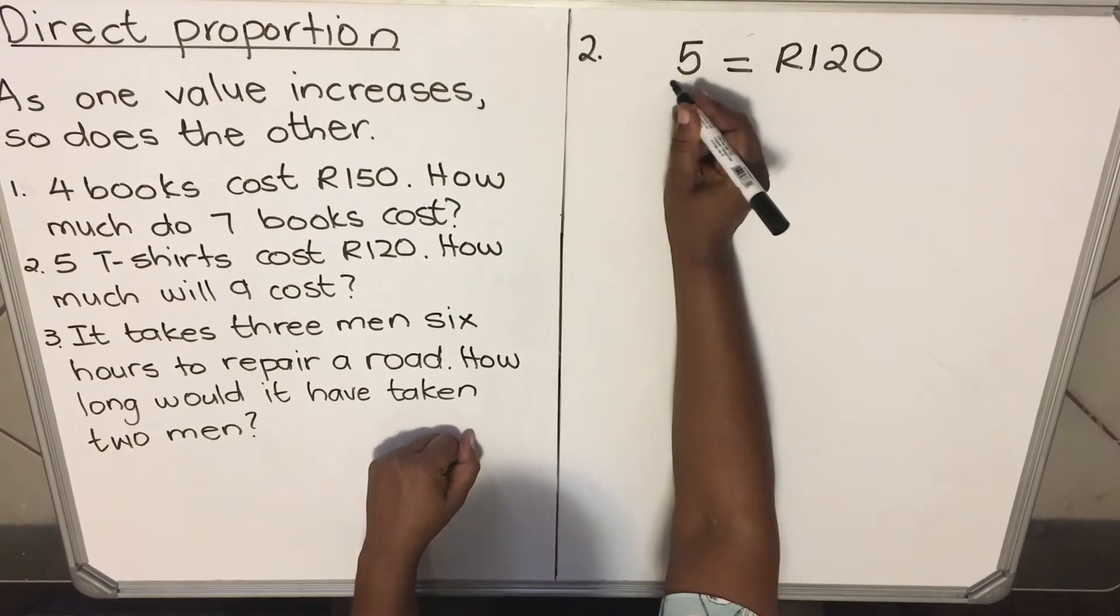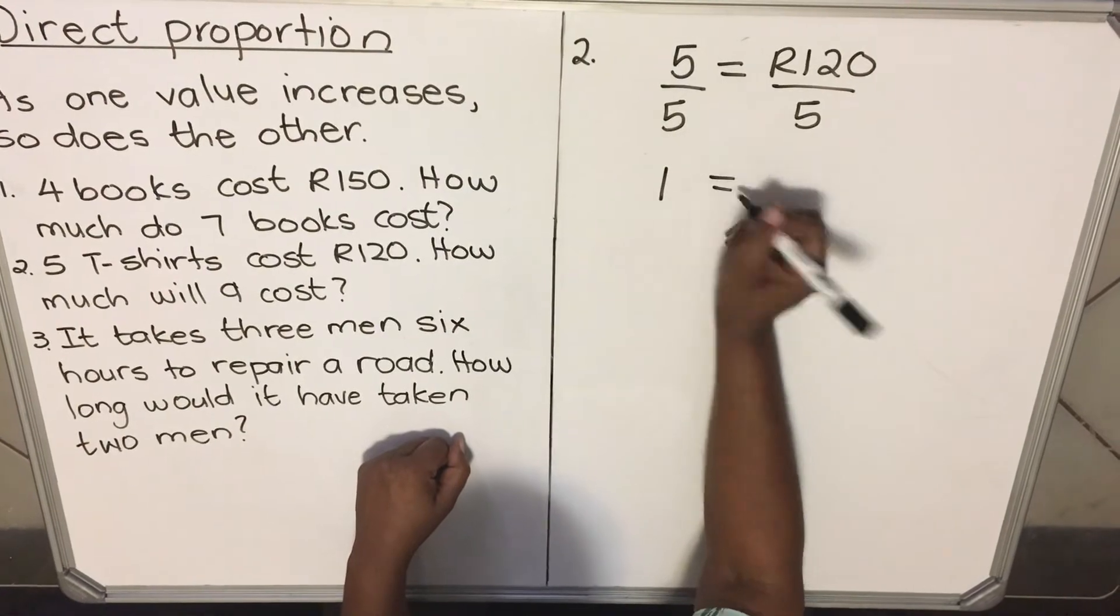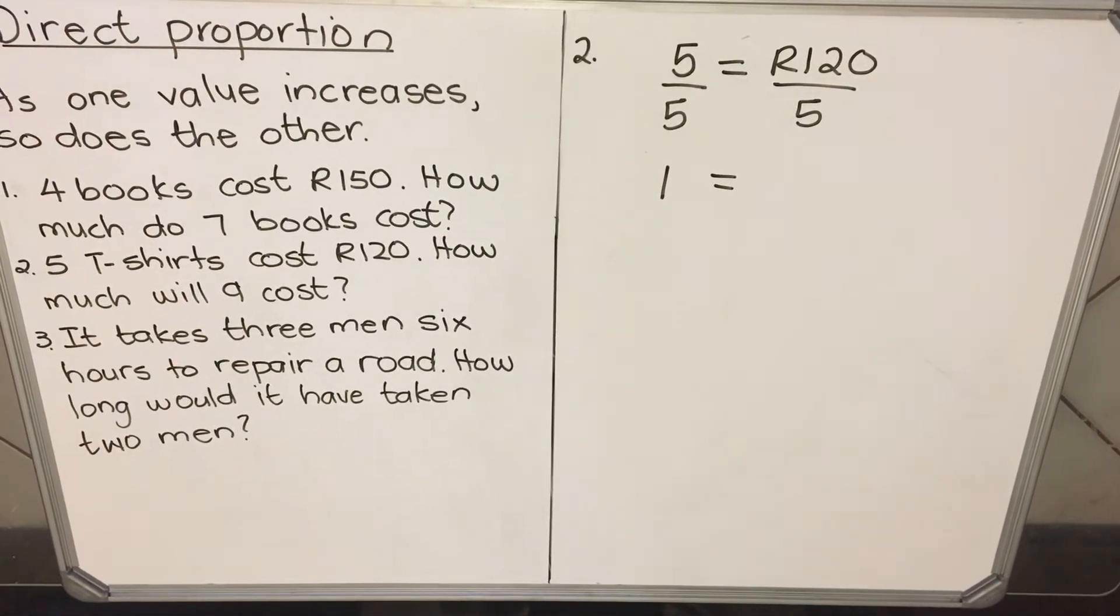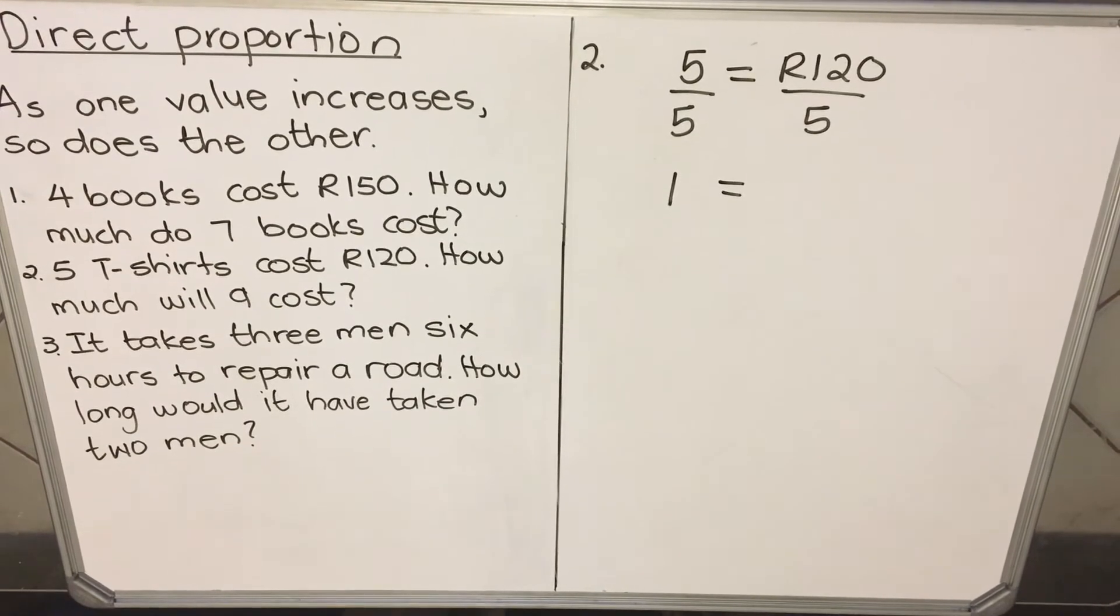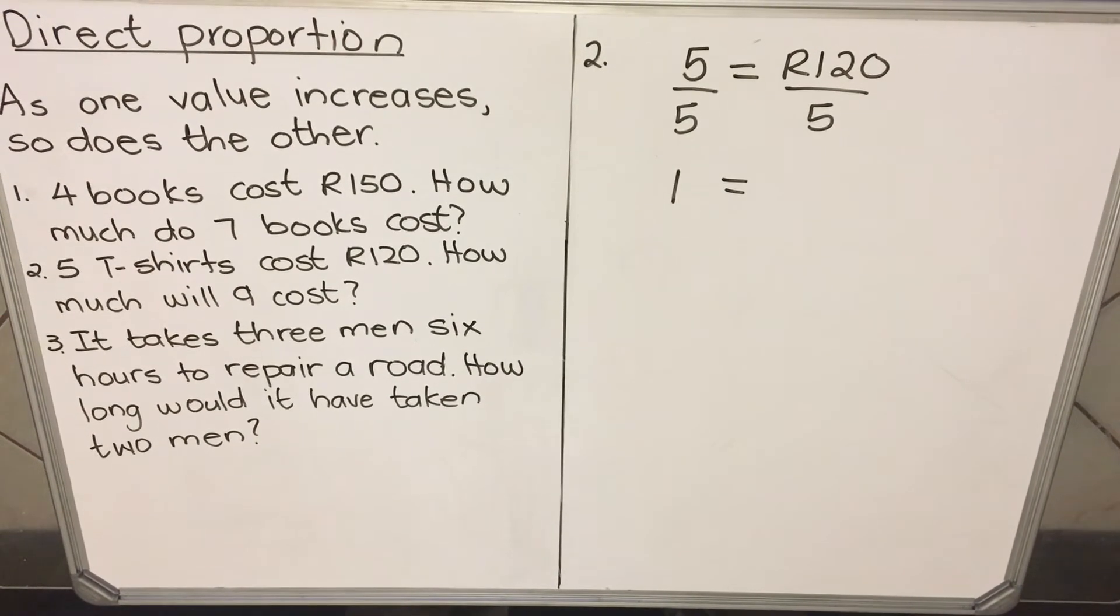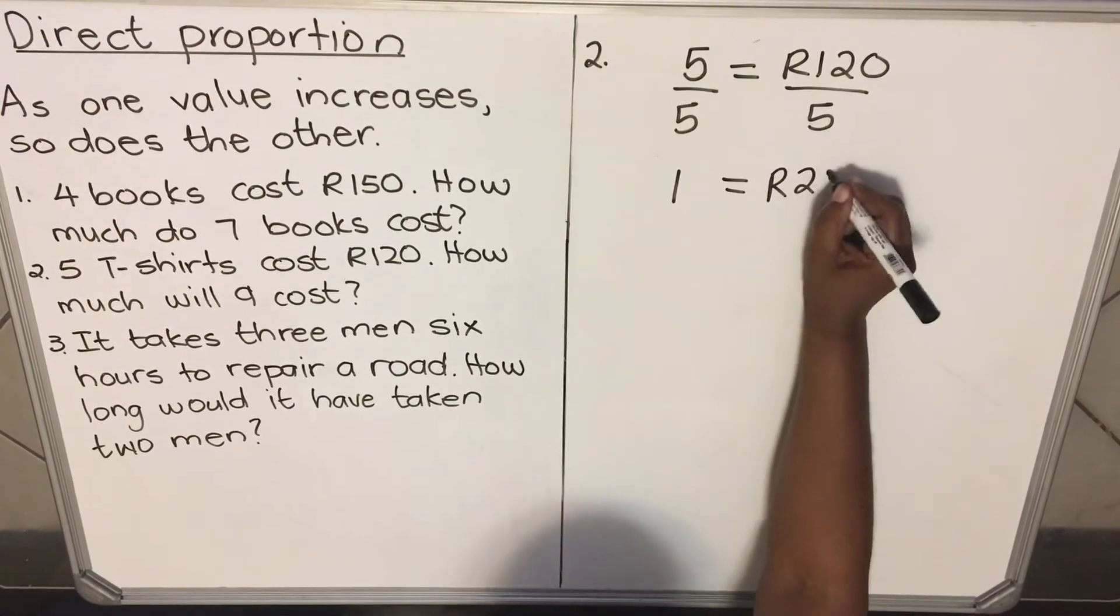We want one. You always find one. So divide by five. Divide by five. One will cost, you divide with whatever number to make one. Divide by five. One t-shirt will cost R24.